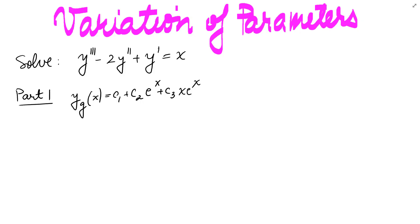In this video, we'll solve the same differential equation that we solved in parts 1, 2, and 3, but using variation of parameters. In part 1, we found that the solution to the homogeneous equation y''' minus 2y'' plus y' equals 0 is c1 plus c2 e^x plus c3 x e^x. We want to find the solution to this equation, which we'll call star, using variation of parameters this time.